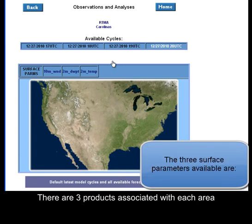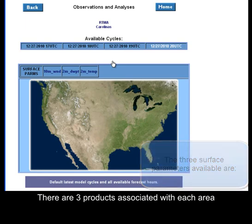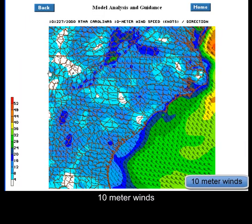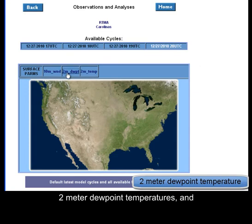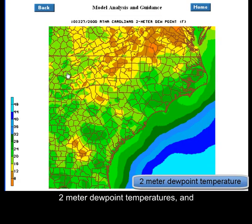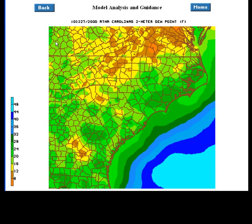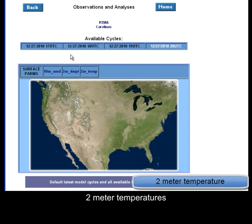There are three products associated with each area: 10-meter winds, 2-meter dew point temperatures, and 2-meter temperatures.